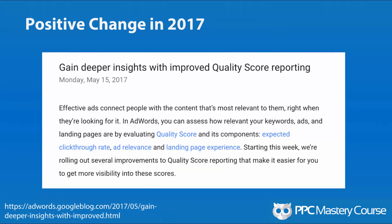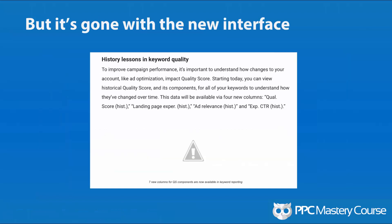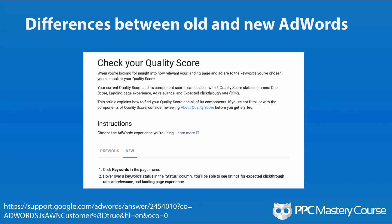In 2017, Google said: we took away quality scores for new keywords, but we're going to give you better reporting. They announced seven new columns in keyword reporting — and of course I couldn't take a screenshot of those columns because they're no longer there; the image vanished from the internet. Google giveth, Google taketh. There is a help article about the difference between quality scores in the new interface versus the previous interface, where you might get some transparent data.